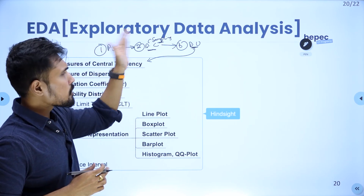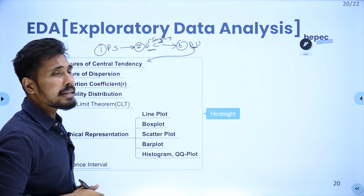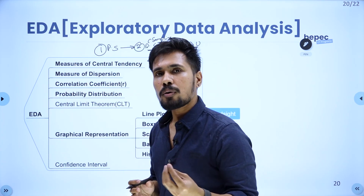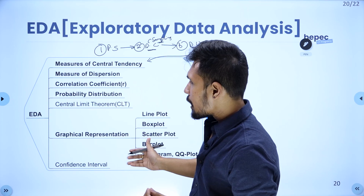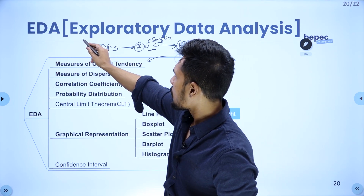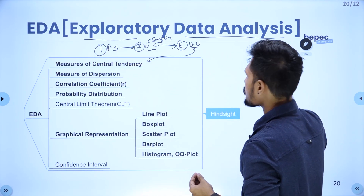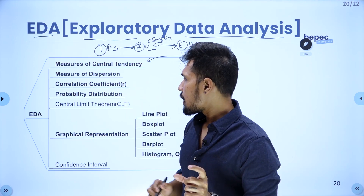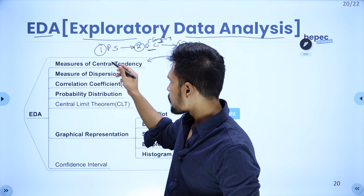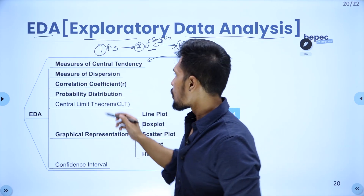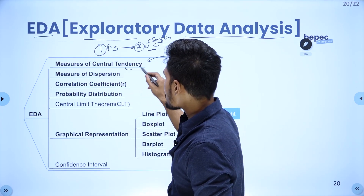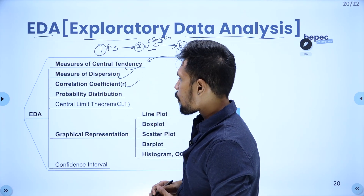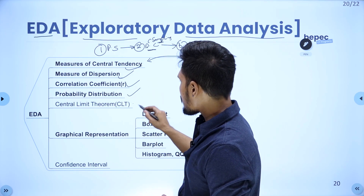The next step is data understanding. Once you've collected the data, you need to understand it. For that we use a technique called Exploratory Data Analysis, or EDA. In EDA, you are able to perform measures of central tendency, measures of dispersion, correlation coefficient, probability distribution, and the central limit theorem.